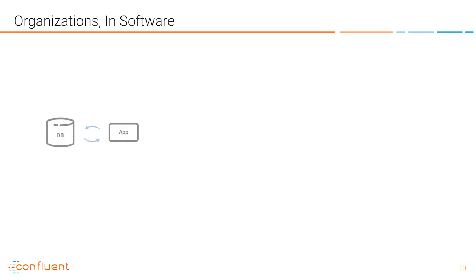Hi! My name is Jay Kreps and I'm the CEO here at Confluent. Today I'm going to introduce you to some of the key trends and concepts that are at the heart of a revolution that's happening in data infrastructure and application architectures.